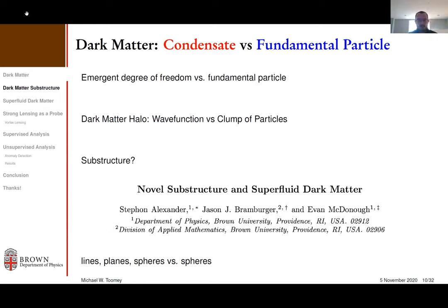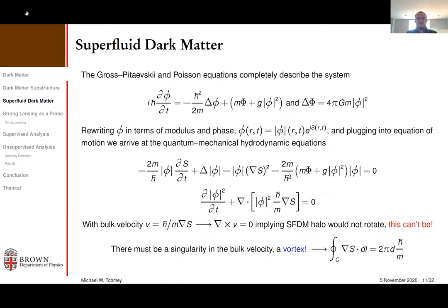When we're training our machine learning algorithms later in this talk, we're going to look at these two disparate forms of dark matter in our analysis. Superfluid dark matter is completely described by the Gross-Pitaevskii and Poisson equations. If you do out the math, you get a system of quantum mechanical hydrodynamical equations and find that the curl of the bulk velocity is zero, which implies there must be some sort of vortex. So we expect vortices if dark matter is superfluid. We're going to simulate what lensing images look like with different types of dark matter and substructure, and this is the less familiar one to go over.